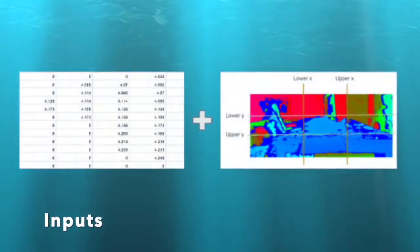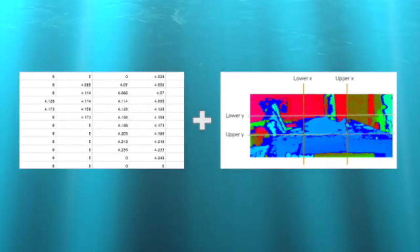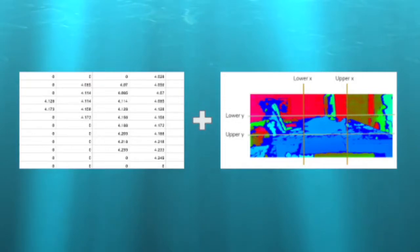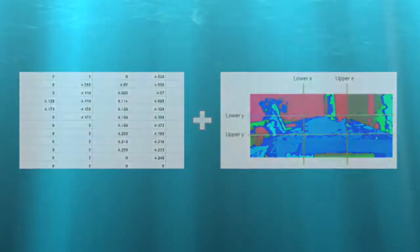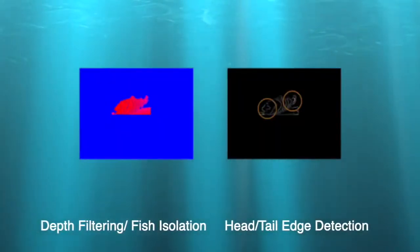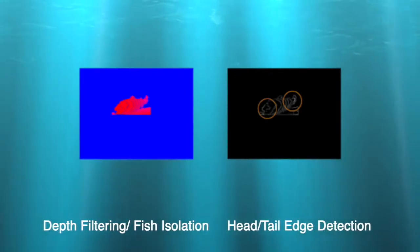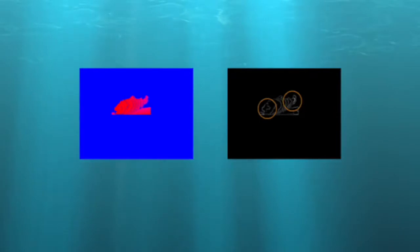Our underwater length detection framework takes in a CSV containing depth information from an underwater image and coordinates for a bounding box encapsulating the fish. First, the algorithm will filter the depth CSV — using the bounding box, only the depth information of the fish is kept, and all other depth information is set to zero in order to isolate the fish from the background. Then, that filtered image is passed to the canny edge detector, which also uses the bounding box to find the coordinates of the edges for the head and tail of the fish. The length of the fish can be calculated using the saved depth information of the fish along with these coordinates.